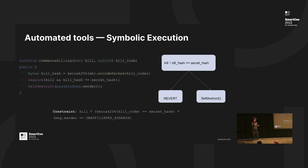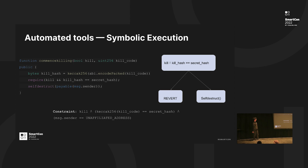What symbolic execution engines do is — let's say self-destruct is an interesting property. If any random person can self-destruct your contract, it's catastrophic. So one way to check this is that symbolic execution engines construct symbolic constraints to reach a program property like self-destruct. Then we append the constraint for self-destruction, where message.sender equals some unaffiliated address. If such a constraint is satisfied, that means any random person can self-destruct your contract.